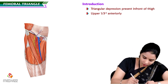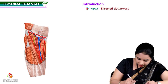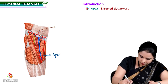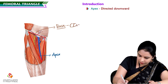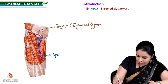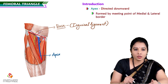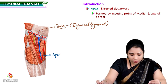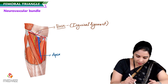Looking at its outline, this is the triangle. The apex of the triangle is directed downwards. The base is formed by the inguinal ligament, and the apex is formed by the meeting point of the medial and lateral borders. This triangle is clinically quite important because a big neurovascular bundle is present here, containing a vein, artery, and nerve.